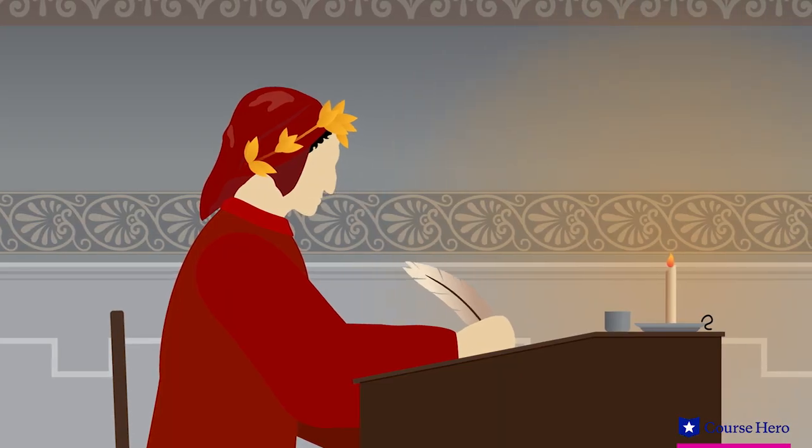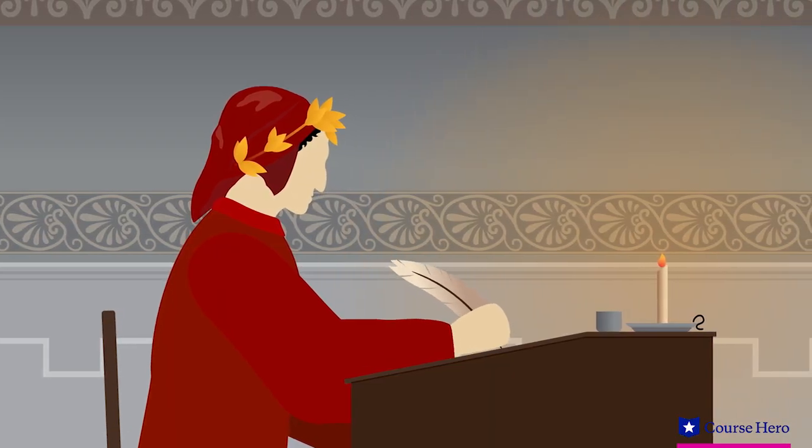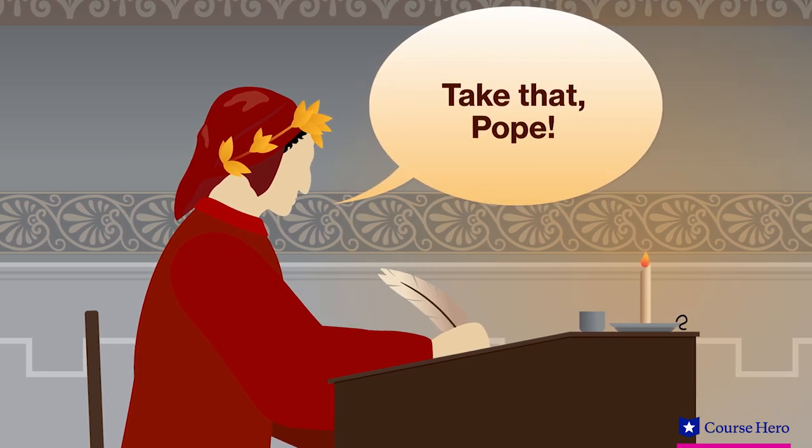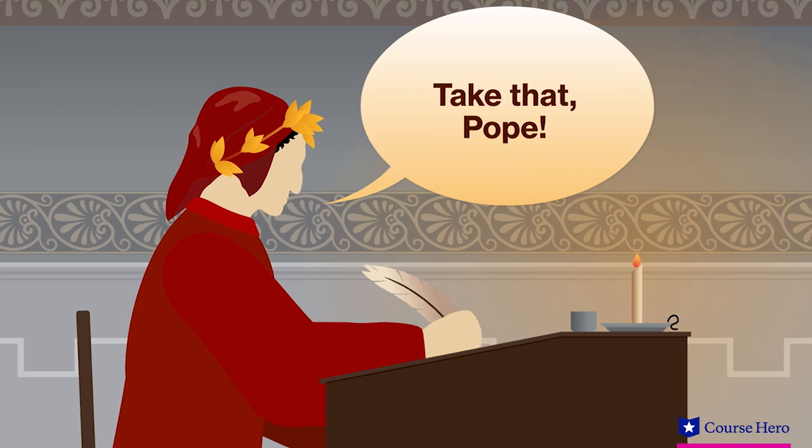Dante belonged to a political party opposed to growing the Pope's powers. In Inferno, Dante judges Pope Boniface VIII for seeking to expand his earthly powers. The Pope and several other political figures have special places in hell in Dante's Inferno.